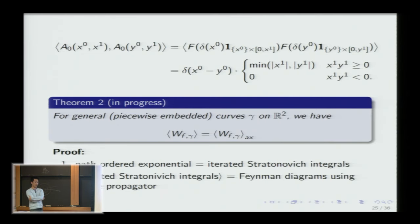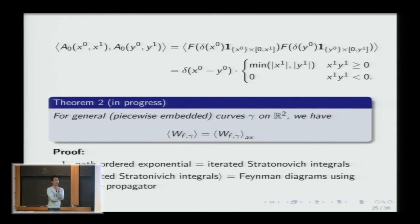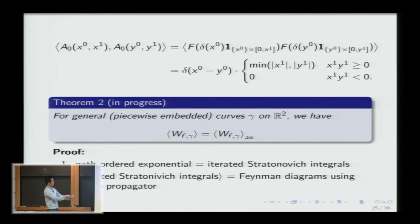Is the perturbative series on R² convergent? Yes — since the theory is free (only a kinetic term, no interactions), the only thing being contracted is the expansion of the Wilson loop exponential, which is already a convergent exponential series. There is essentially only one Feynman diagram at each order, so no factorial growth of diagrams.